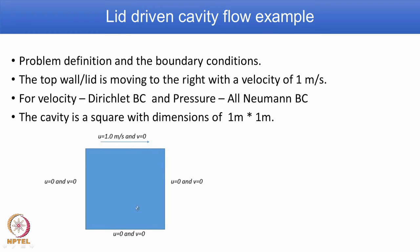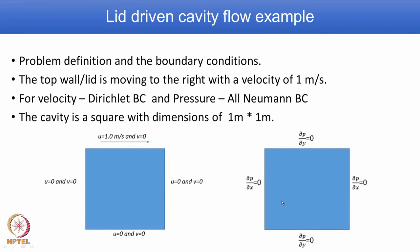For the Neumann type pressure boundary condition: ∂p/∂x = 0 on the vertical faces and ∂p/∂y = 0 on the horizontal faces.